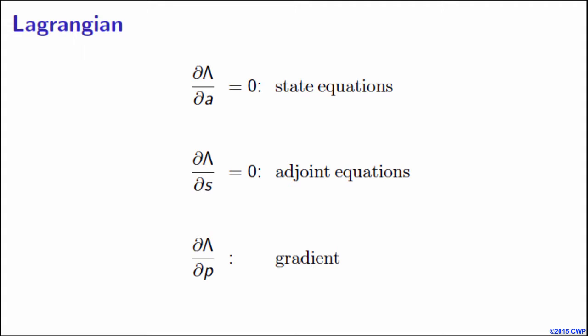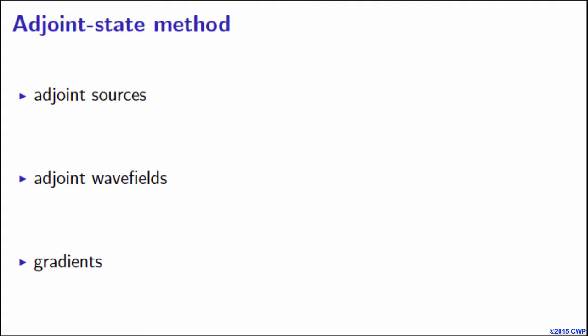The practical recipe to obtain the gradient can be described as follows. We first need to obtain the adjoint sources, and the formula depends on the criterion used in the objective function. Then by propagating the adjoint sources, we obtain the adjoint wavefields. Finally, the gradient is given by some mathematical formula involving the state and adjoint state variables. Let me skip all formal derivations involving taking derivatives and integrating by parts and just show you the results.